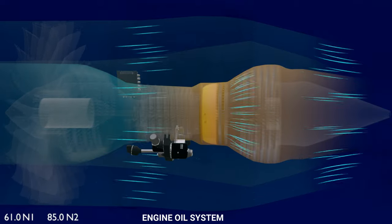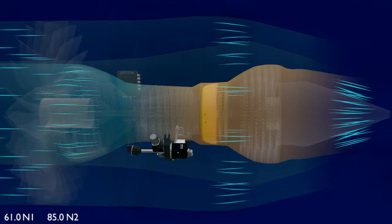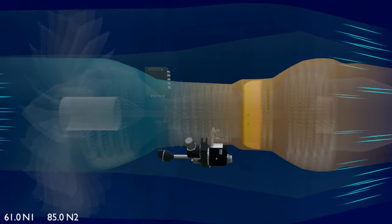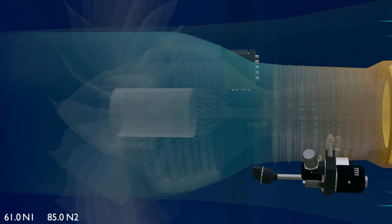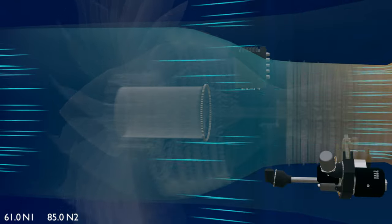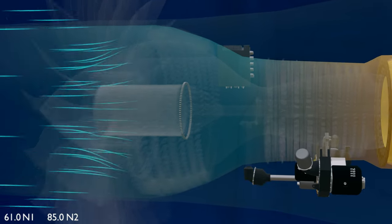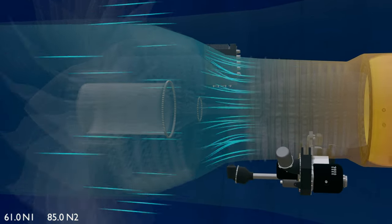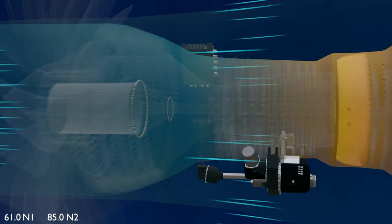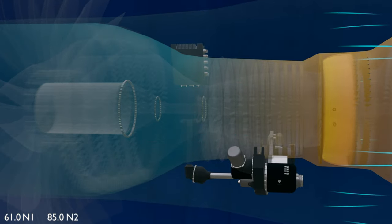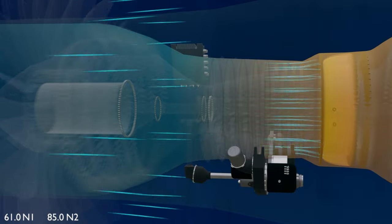The engine oil system lubricates and cools the engine gearboxes and bearings. The GE90 has six engine bearings. In the front section of the engine, number one roller bearing and number two ball bearing hold the front of the N1 shaft. Number three ball bearing and number three roller bearing hold the front of the N2 shaft.